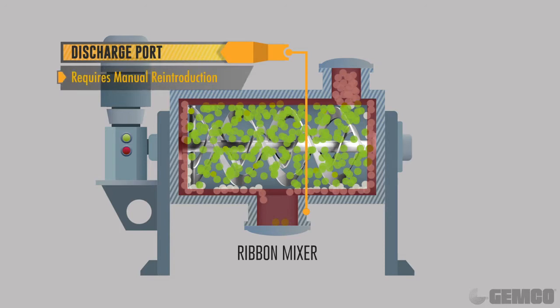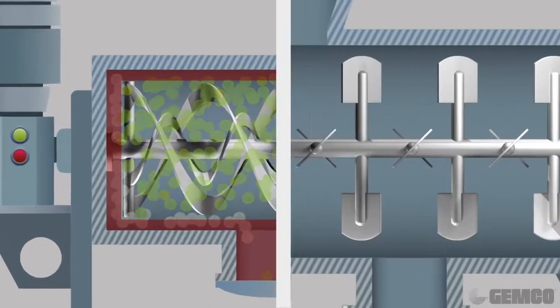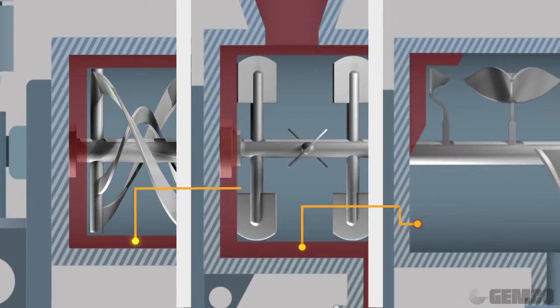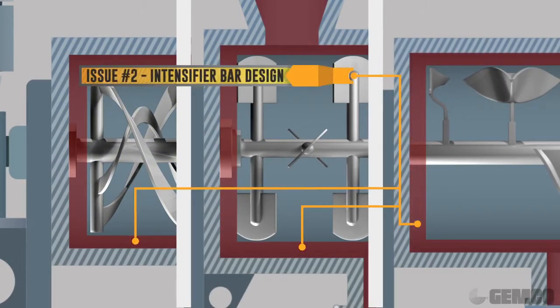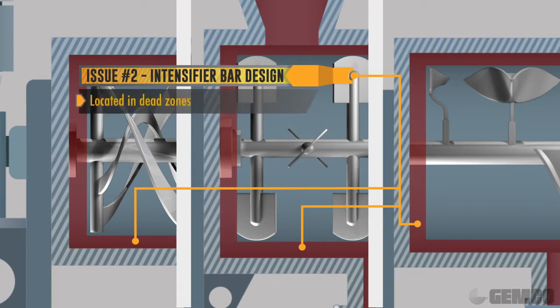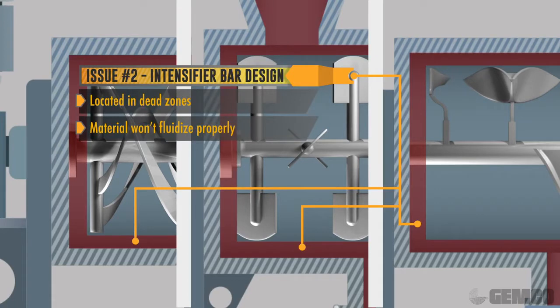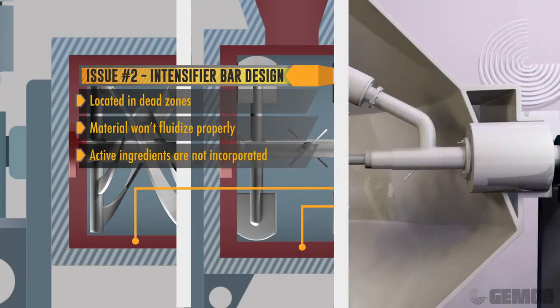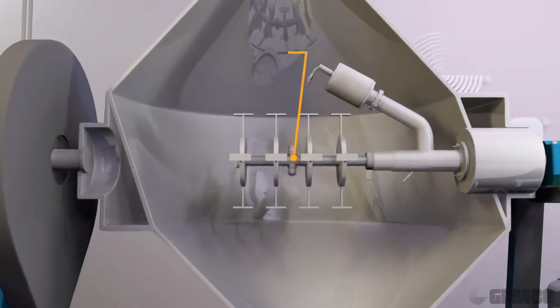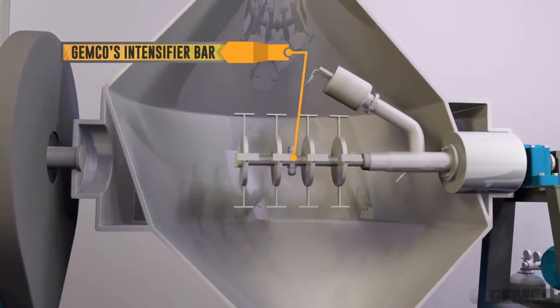The second competitor design flaw lies in the positioning of the intensifier bars or fluidization zones. These intensifier bars should ideally be located in the mixing zone where every particle passes through. Many times competitors have their intensifier bars in dead zones. When this happens, the material will not fluidize properly and active ingredients will not be incorporated into the batch. Jemco strategically places the intensifier bar in the mixing zone so your batch is thoroughly blended.